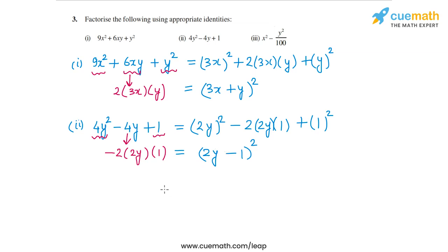This is the factored form of the second expression. Now let's go to the third part. The third part is x square minus y square by 100. Now x square is the square of x and y square by 100 is the square of y by 10.